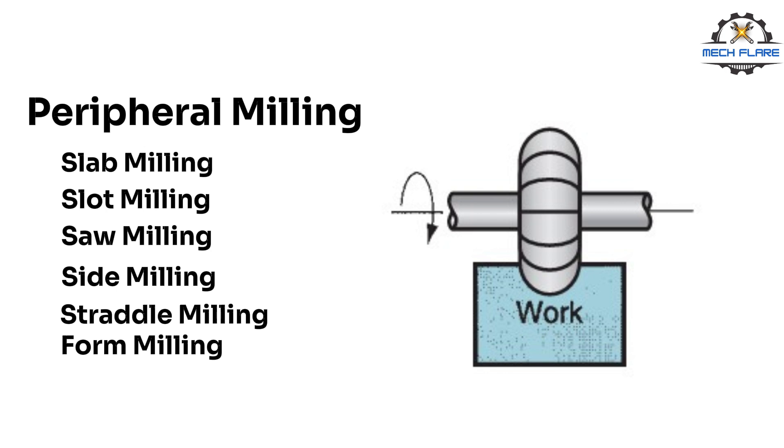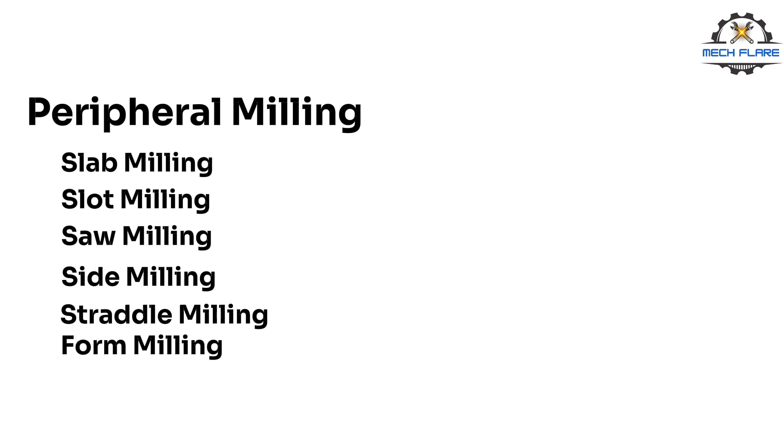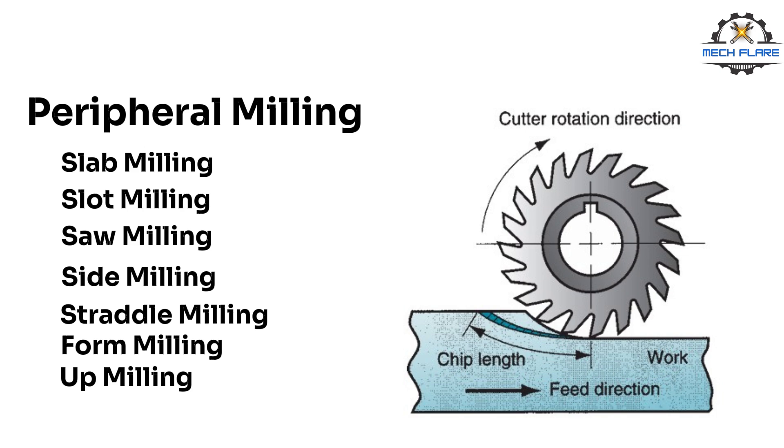There are two types of peripheral milling based on the direction of cutter rotation, which are up milling and down milling. In up milling, also called conventional milling, the direction of motion of the cutter teeth is opposite the feed direction when the teeth cut into the work. It is milling against the feed.